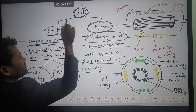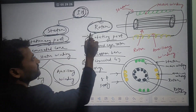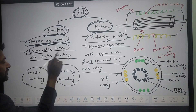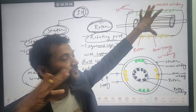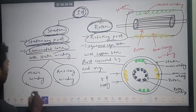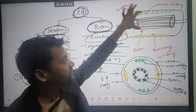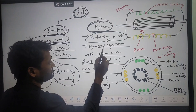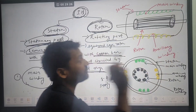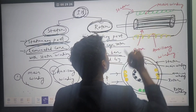To recap: the induction motor has two parts — stator is the outer stationary part, and rotor is the inner rotating part. The stator core is a laminated core with two windings — main winding and auxiliary winding. The rotor has a cylindrical structure with copper bars short-circuited by end rings. The field windings are thin copper wire, but the rotor bars are thick copper wires, short-circuited at both ends.